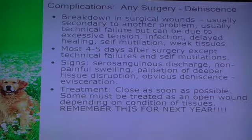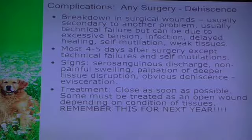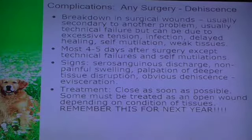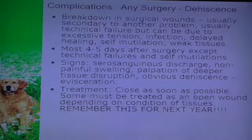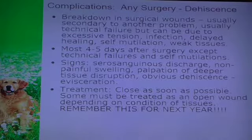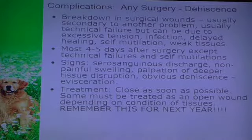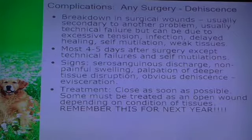You can also get dehiscence of a non-cavity incision due to excessive tension - for example, if you removed a large mammary mass and had tension on your closure, it could come loose. Infection can cause dehiscence. Anything that causes delayed healing can cause dehiscence. Failure to use a sufficient E-collar, or the animal removing it, can cause it. Conditions that cause weak tissue - diabetics, Cushingoid dogs, old debilitated dogs or cats - are also at risk.